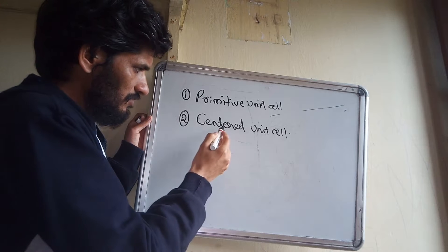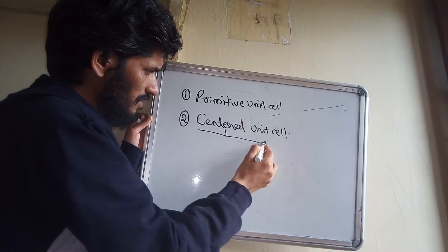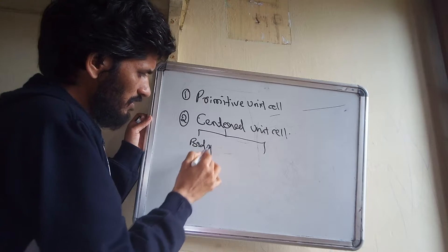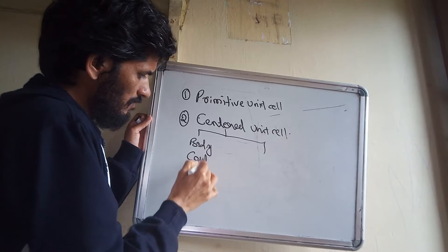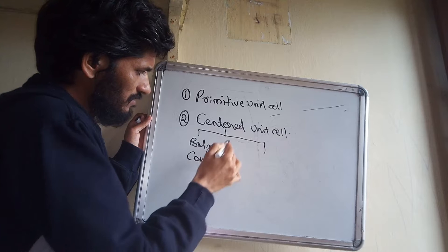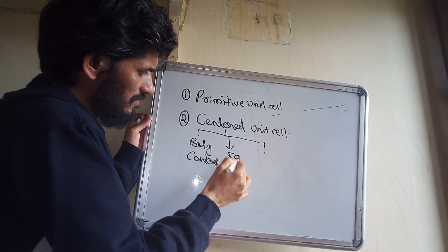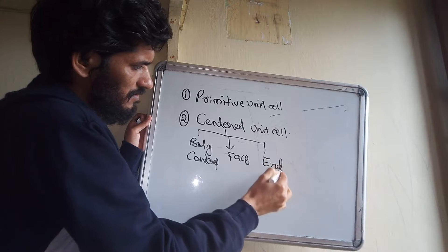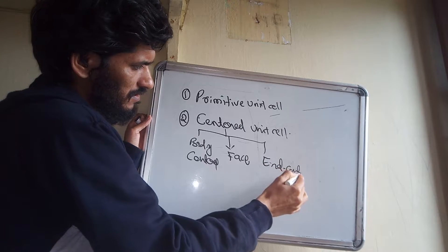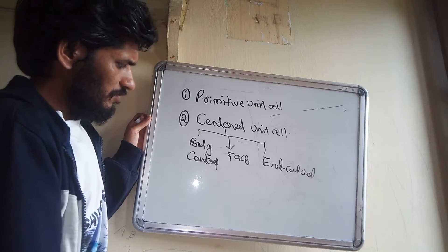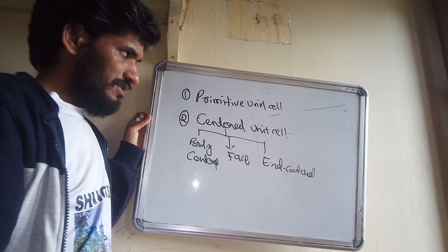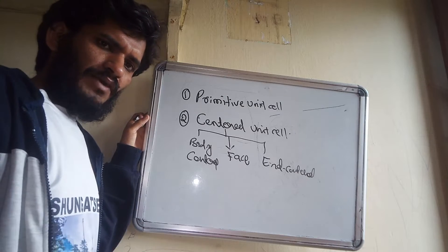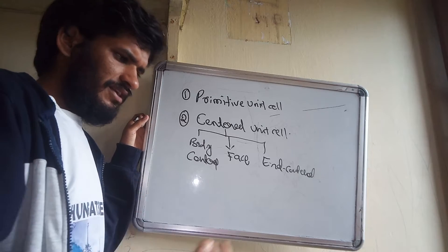These centered unit cells are again divided into three types: the first is body-centered, the second is face-centered, and the third is end-centered. We have learned clearly what is body-centered, face-centered, and end-centered with examples. Now, very importantly, we need to understand the parameters for measuring a unit cell.